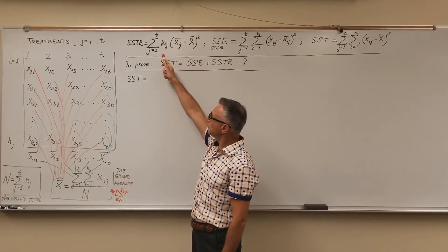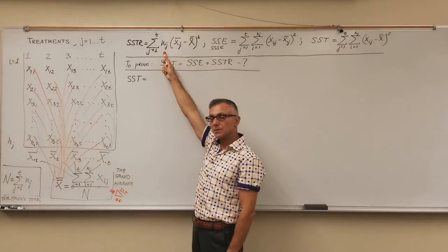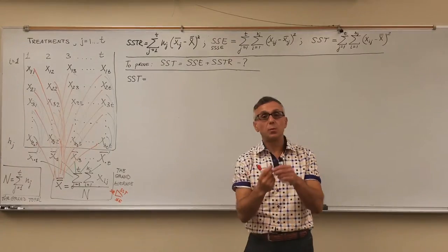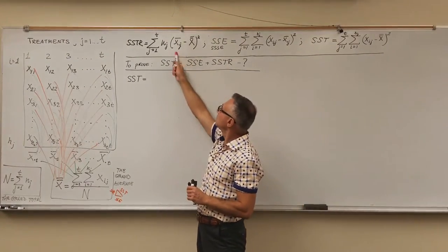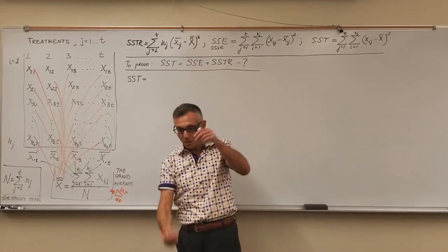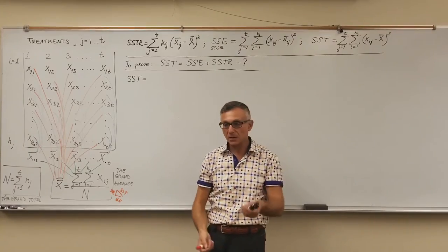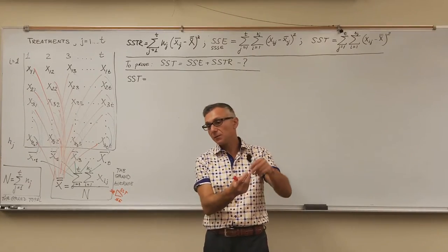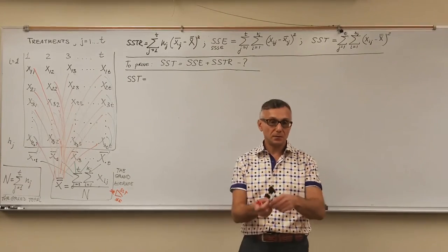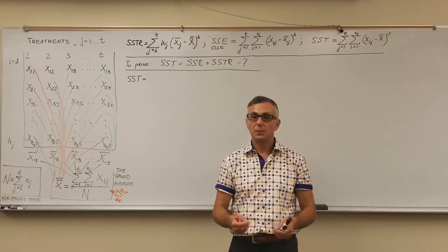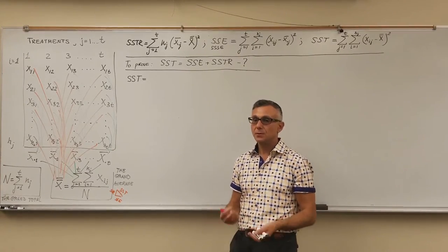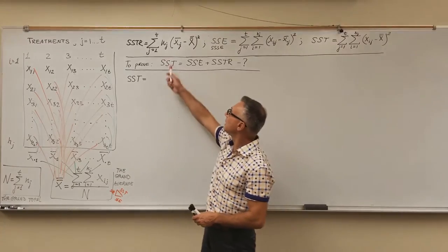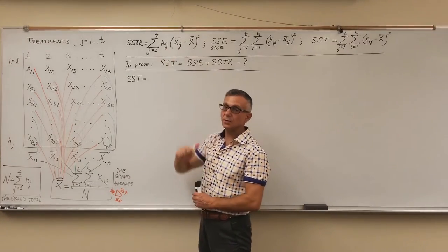For the sum of squares of treatments, we multiply each difference by N_J — that's the size of the treatment — which is the weight of the difference. We need to look at this variability depending on what kind of treatment it comes from and its size. For example, a variability of 10 from a treatment with 5 measurements is very different from a variability of 10 from a treatment with 1000 measurements. We have to account for them differently, which is why we use weights for the treatments.